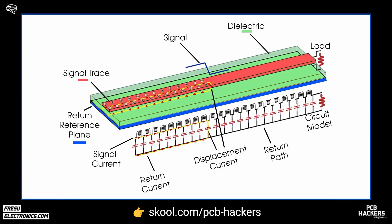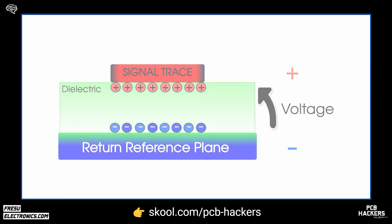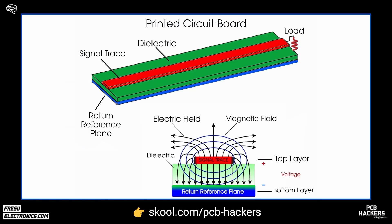Why do we call it a return reference plane? It gets its name for two reasons. Firstly, it serves as the return path for the signal traces — the return current generated by the signal will flow back to the source through the return reference plane, completing the current loop. Secondly, it earns this name because it provides the reference potential for the signal trace; it offers the signal a reference for its electric fields. Note that I haven't referred to this plane as ground, because more often than not the term ground is misused to describe the location where current sinks.